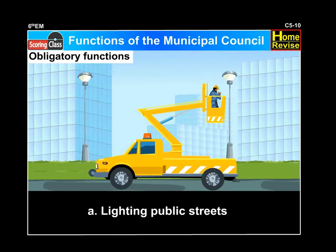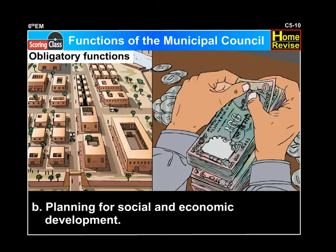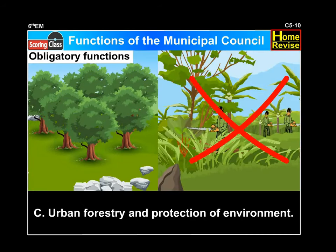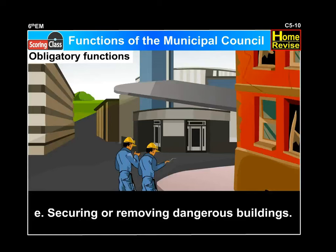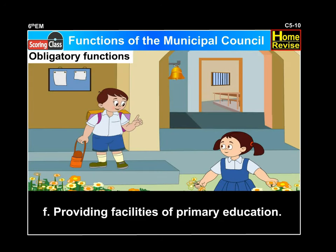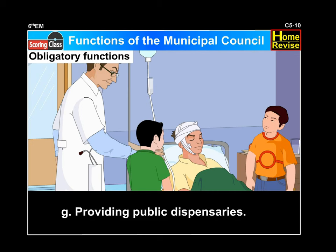Obligatory functions include: A. Lighting public streets. B. Planning for social and economic development. C. Urban forestry and protection of environment. D. Registration of births and deaths. E. Securing or removing dangerous buildings. F. Providing facilities of primary education. G. Providing public dispensaries.